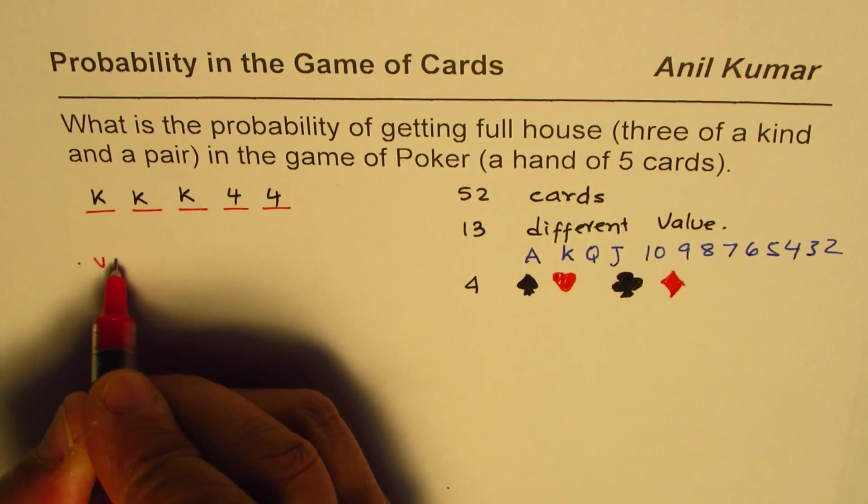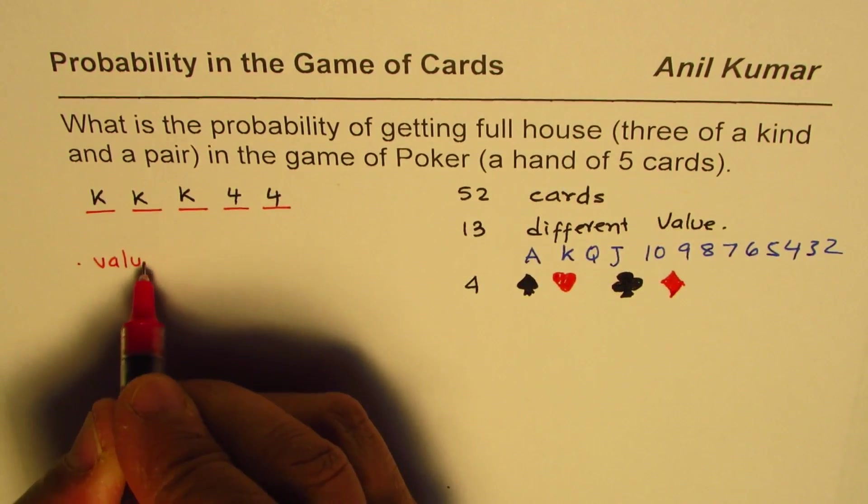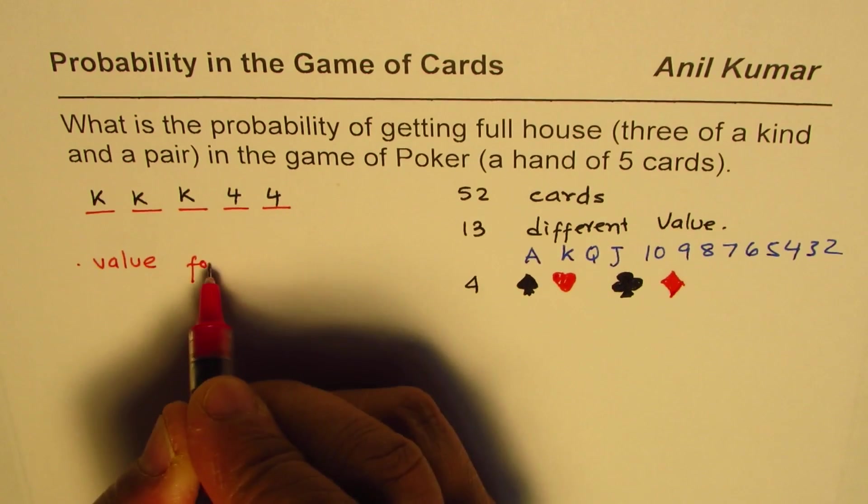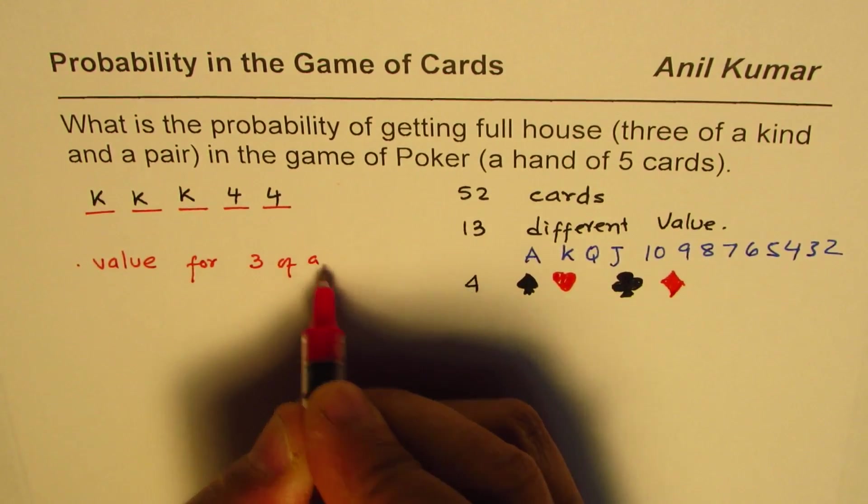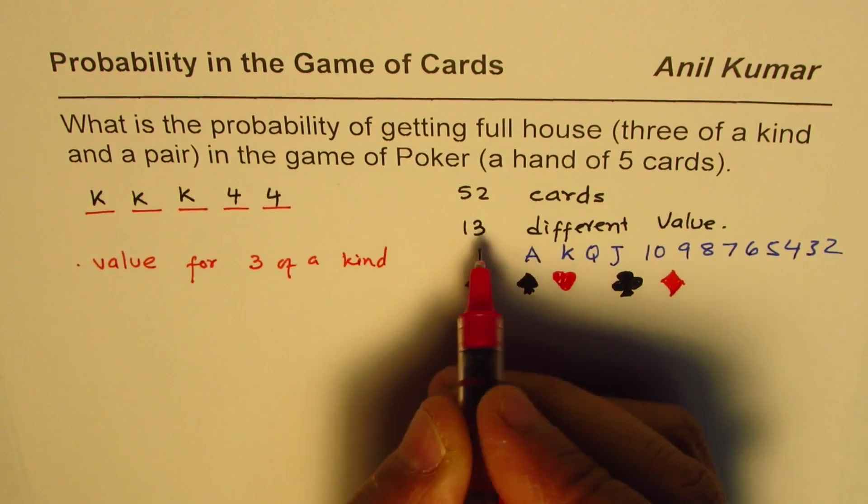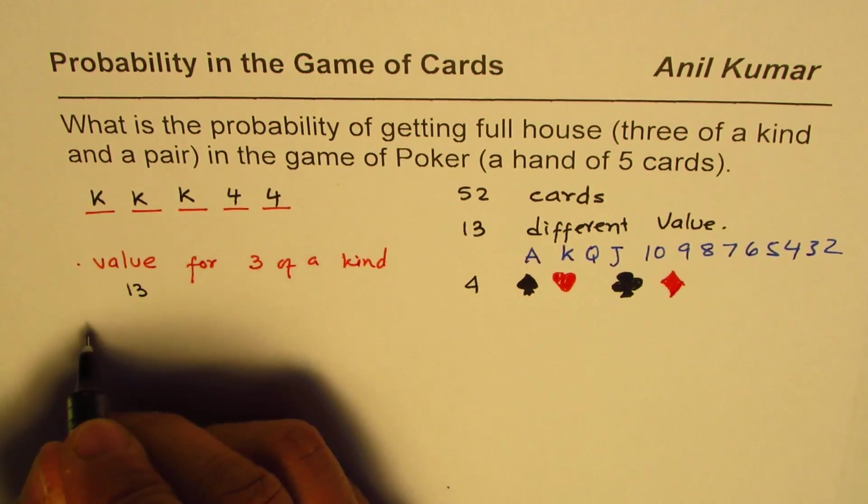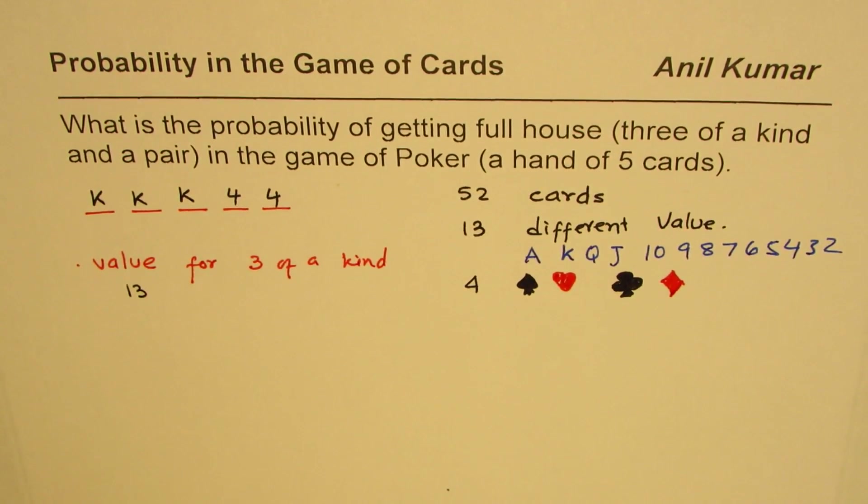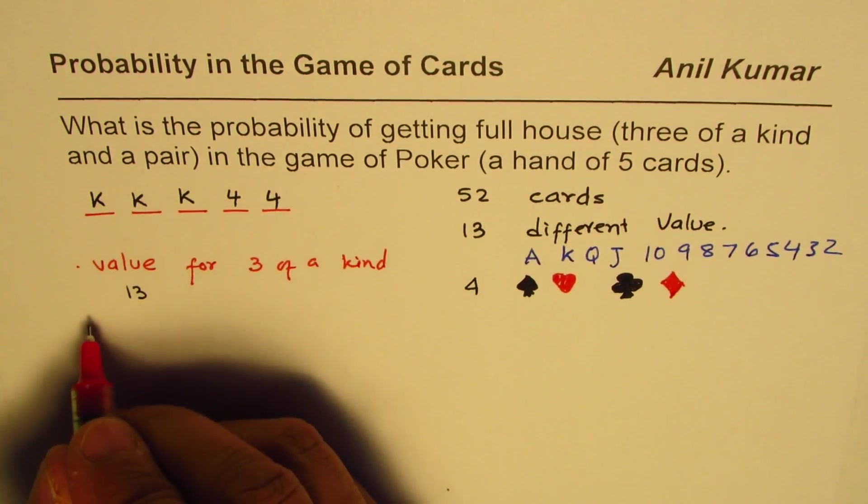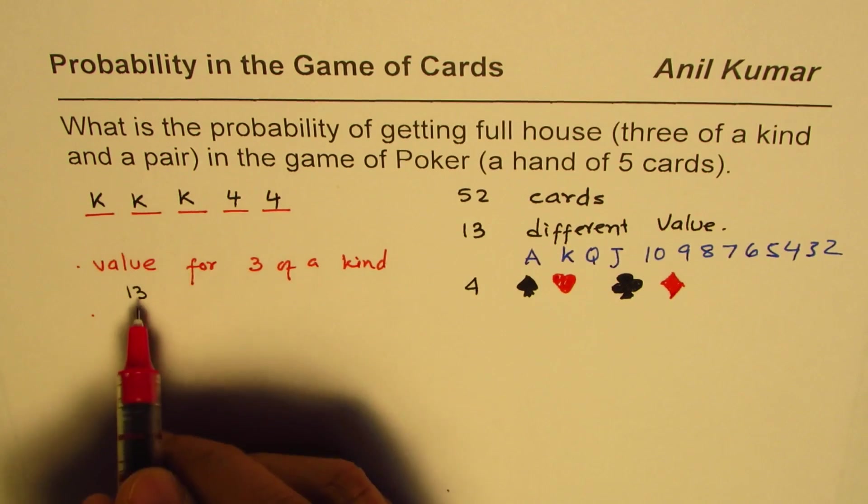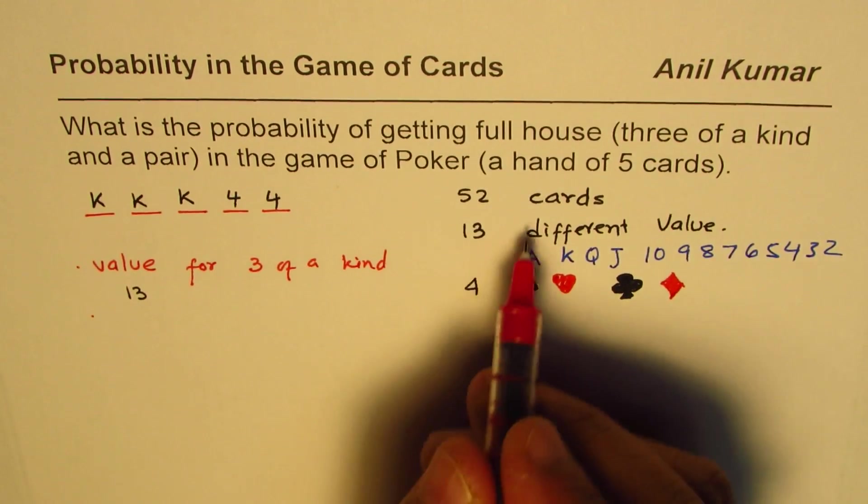So the first step here is let's find the value of card for three of one kind. So value for three of a kind, right? So we could select this value from 13, right? So that is we have 13 options and how many do we choose? We choose three out of those, right?